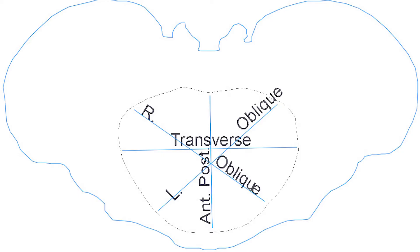When we look at the diameters of the pelvis, we can see that the brim of the pelvis is wider in the transverse diameter and shorter in the anterior-posterior diameter. The cavity is circular, and the outlet of the pelvis is wider in the anterior-posterior diameter and smallest in the transverse diameter.